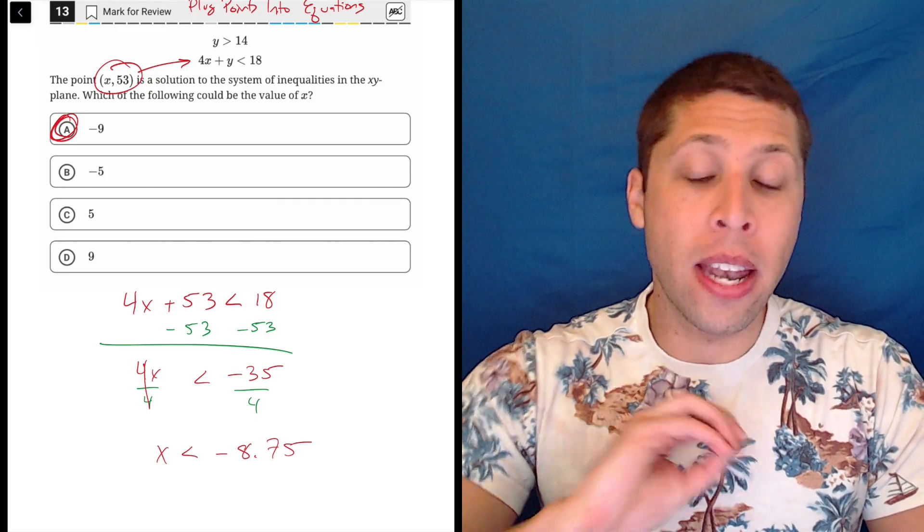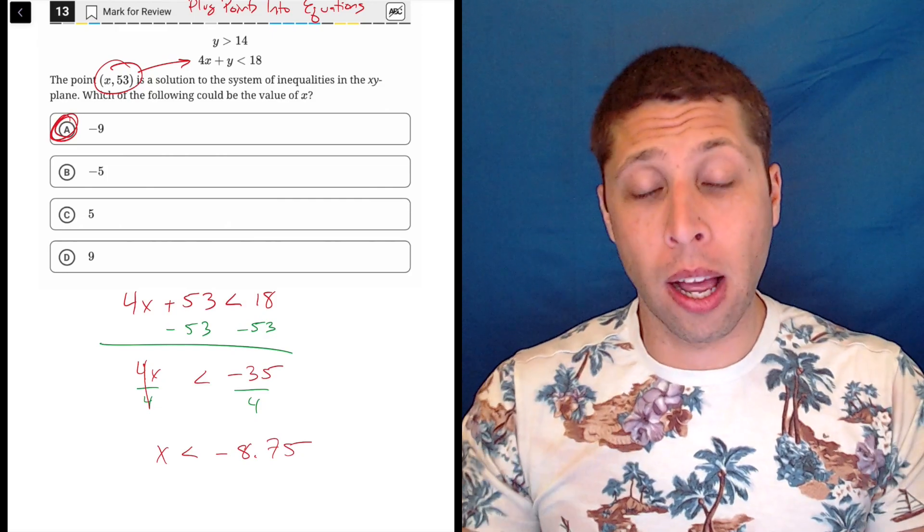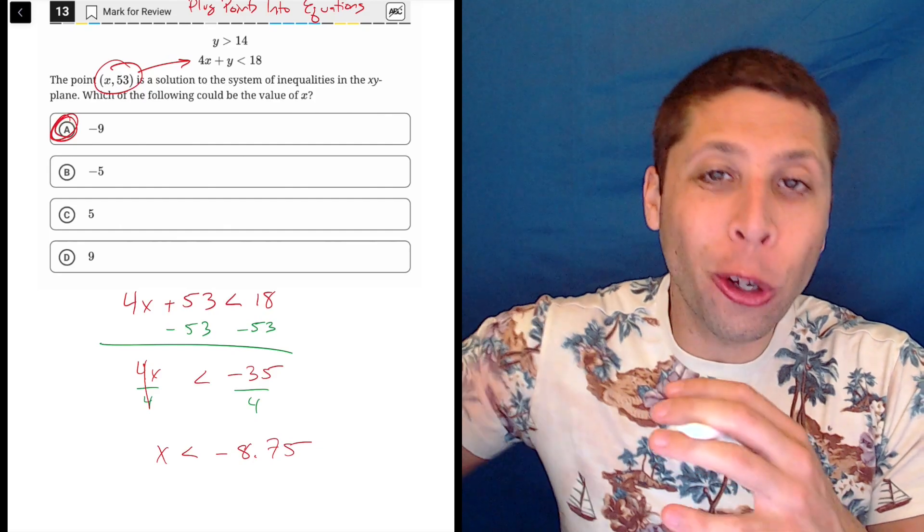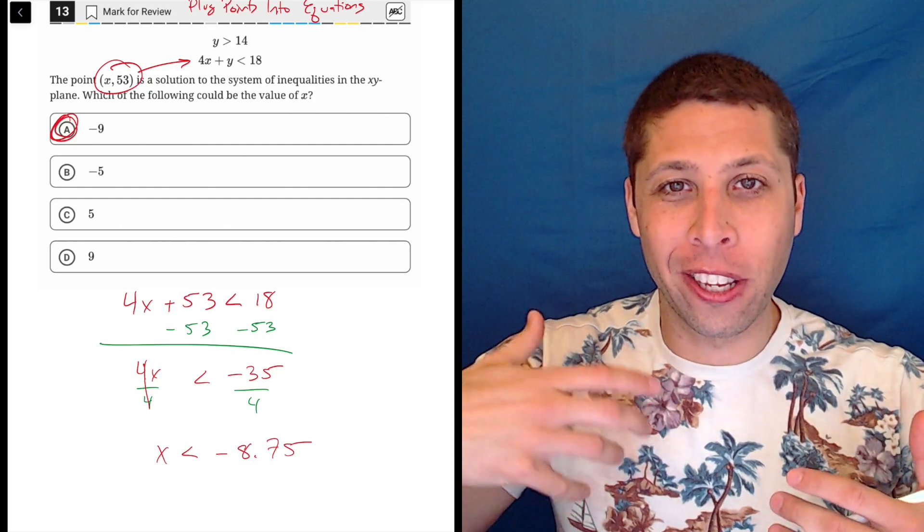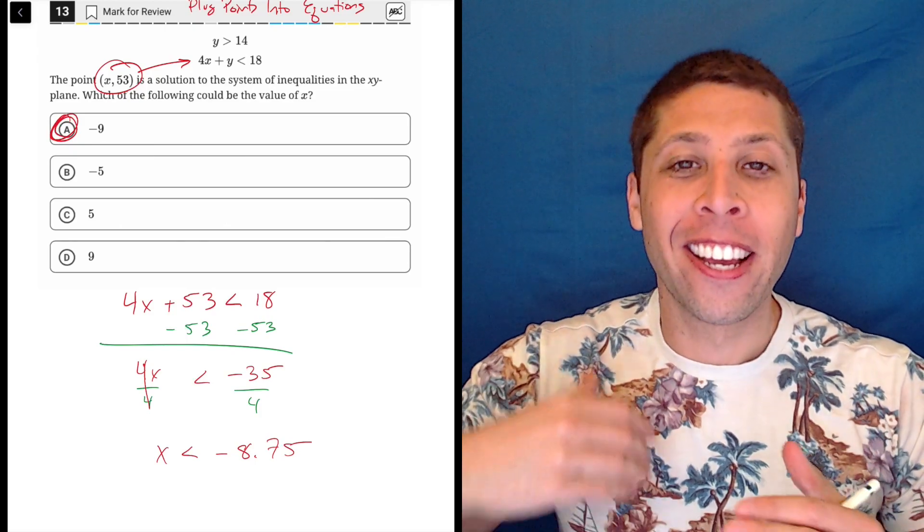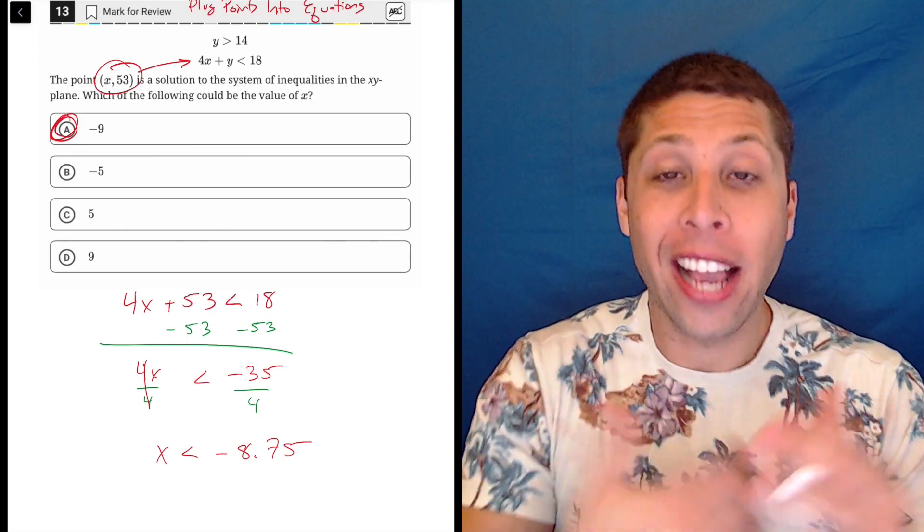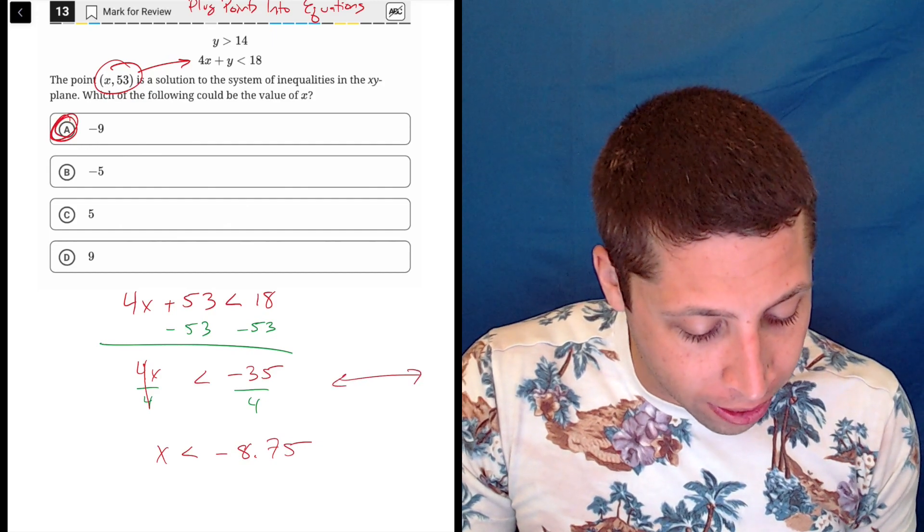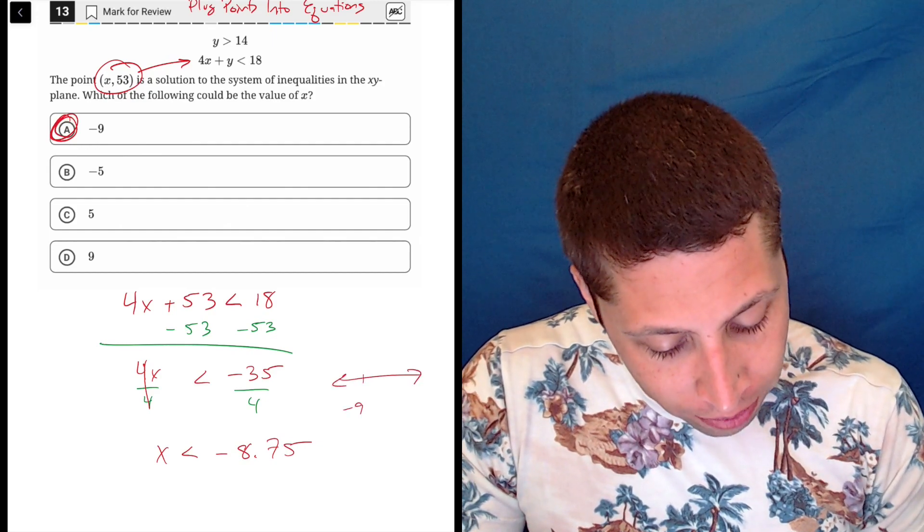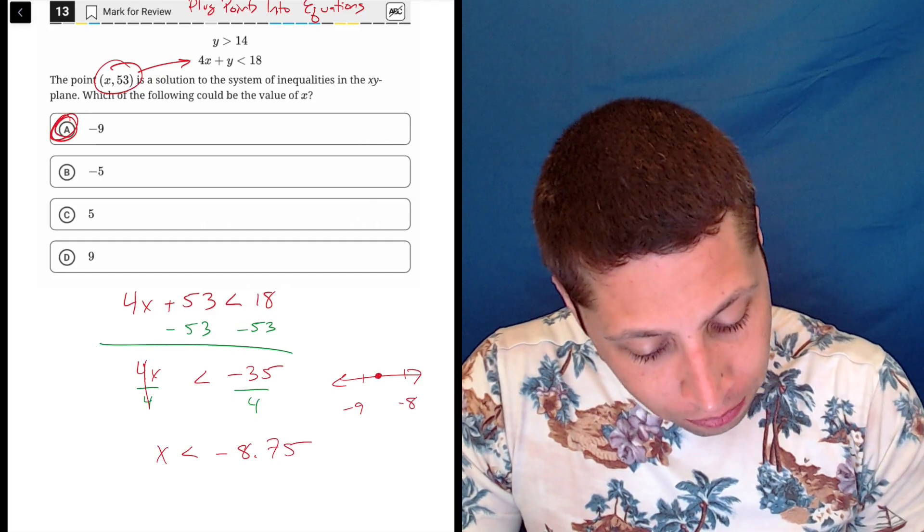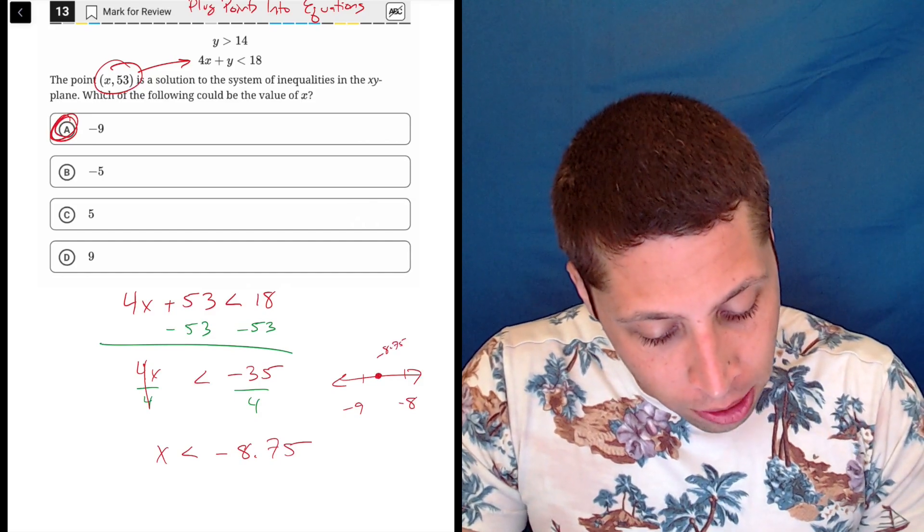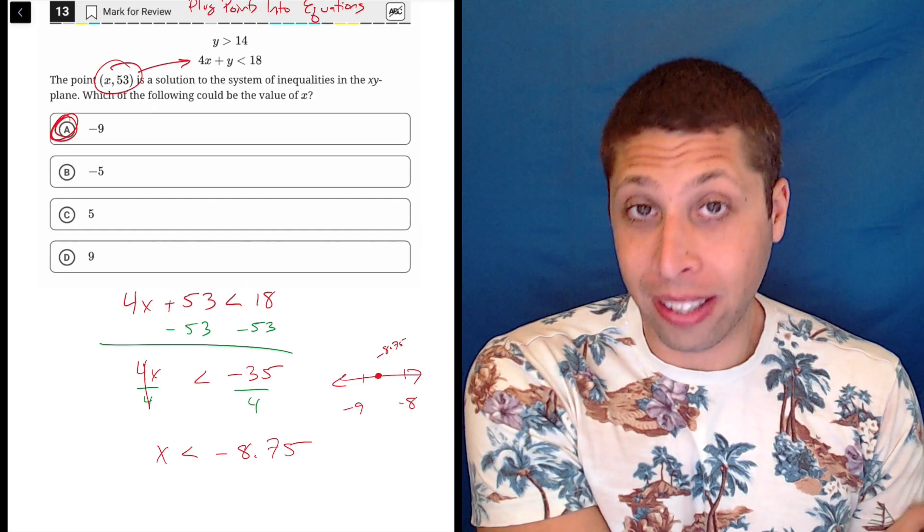Just remember when you're on the negative side of kind of like the number line, the smaller numbers kind of look bigger, right? 9 is, or I should say negative 9, is smaller than negative 8.75 because in our number line, it's further to the left, right? So negative 9 would be here, negative 8 would be here, and negative 8.75 would be somewhere like here. So the further to the left means smaller, means less than.